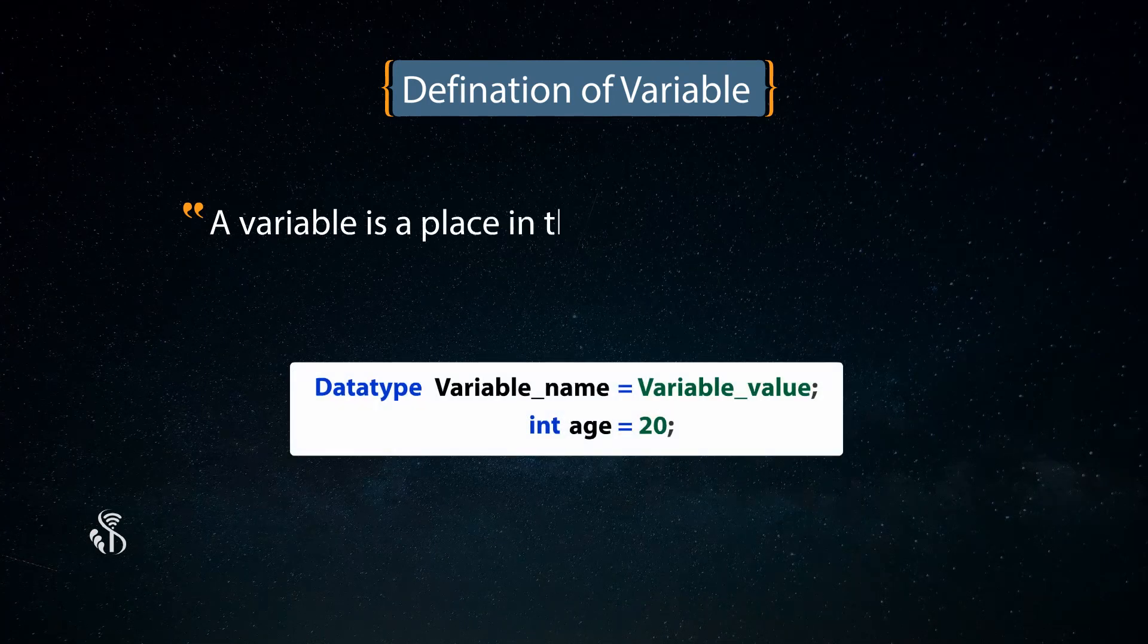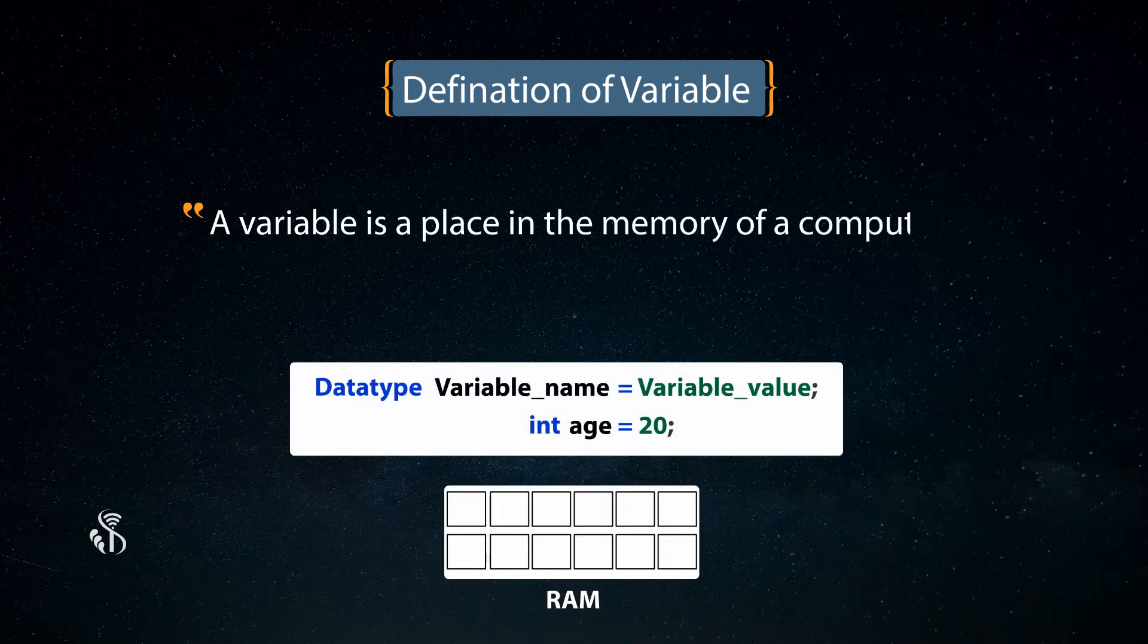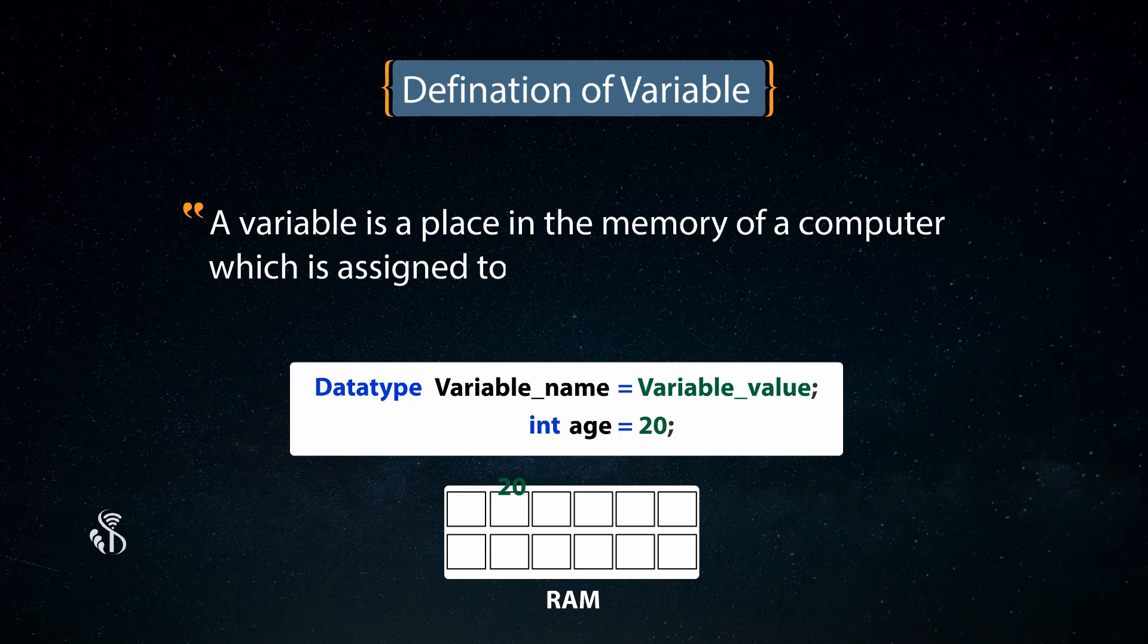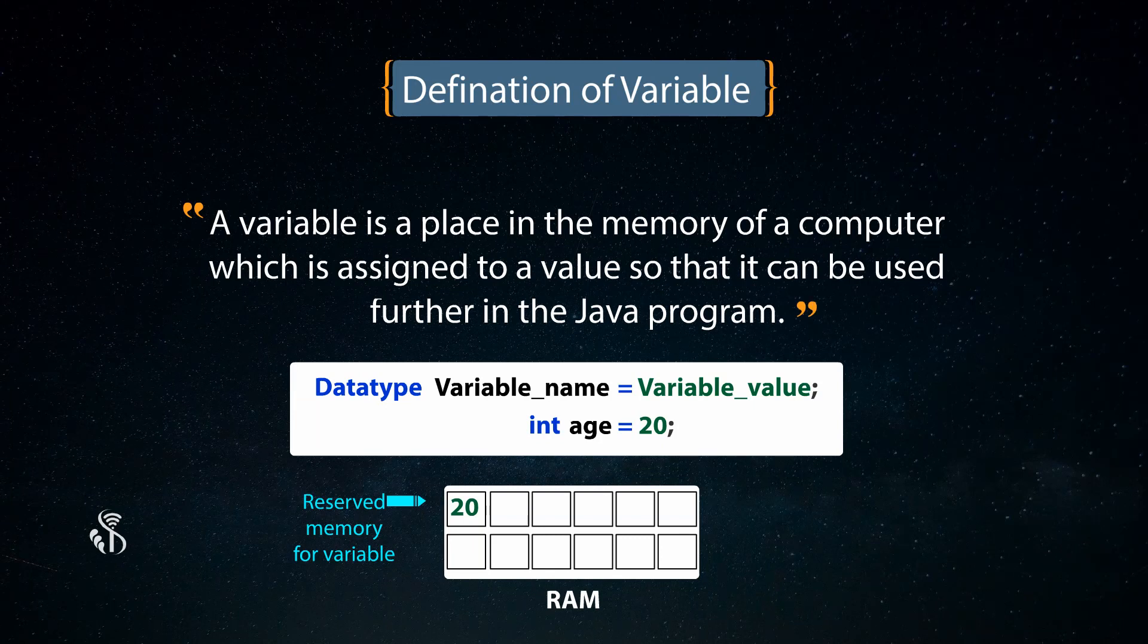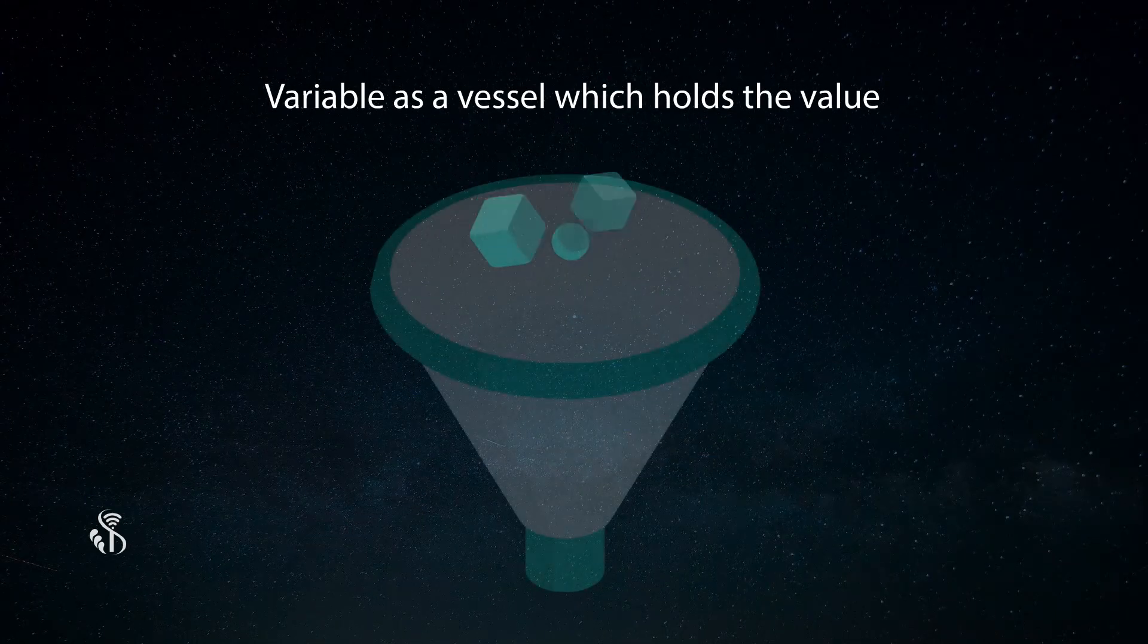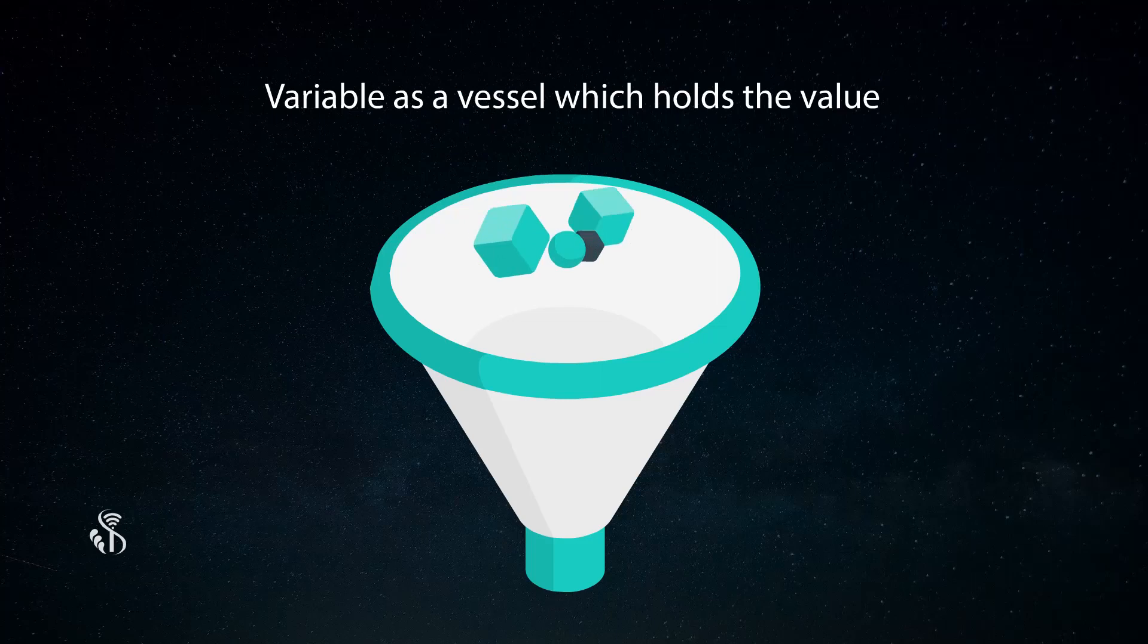A variable is a place in the memory of a computer which is assigned to a value so that it can be used further in the Java program. You can also think of a variable as a vessel which holds the value so that the user can use it while writing a Java program.